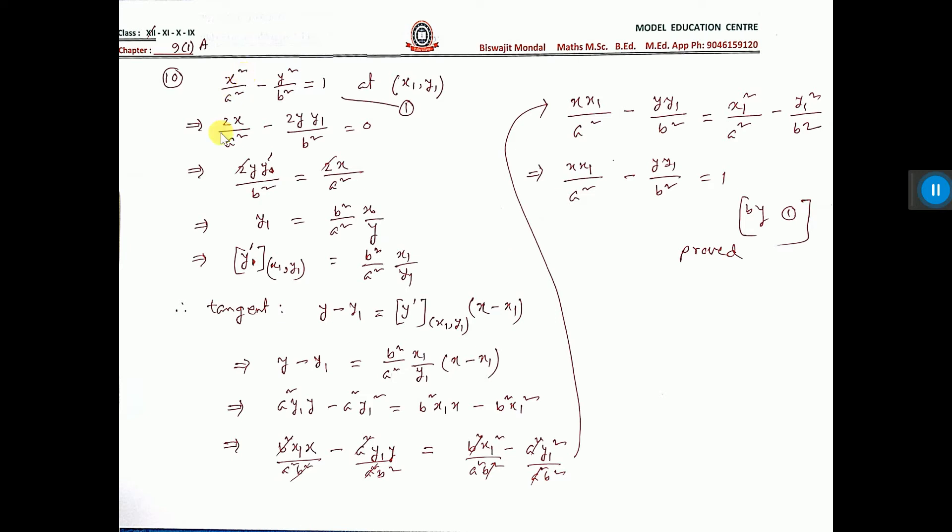First differentiate, x square differentiation 2x, constant will come out. y square differentiation 2y y dash or y1, b square will come out constant. And 1 constant, differentiation 0.